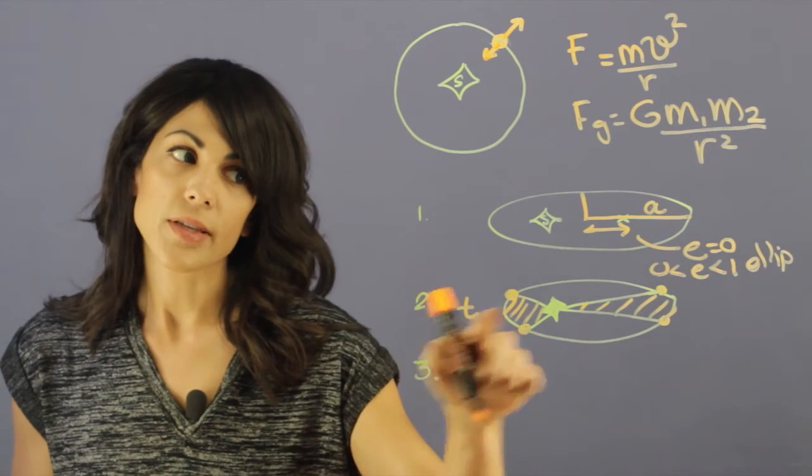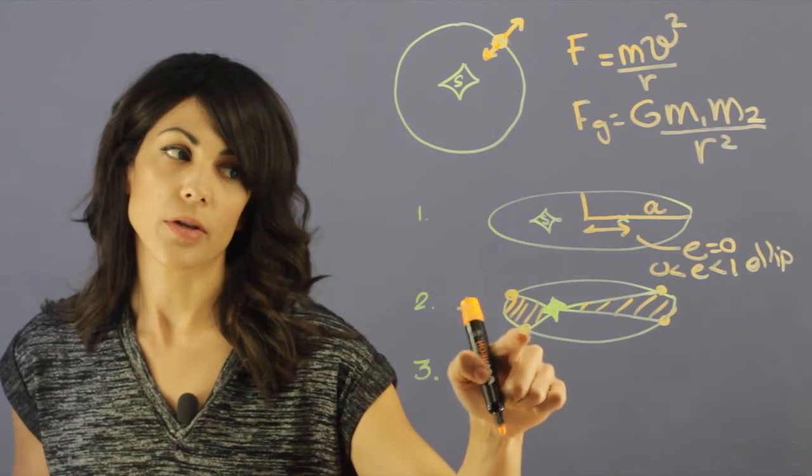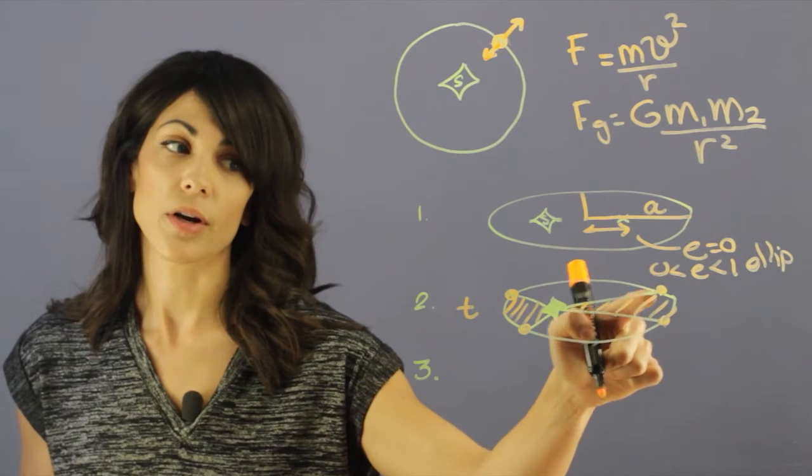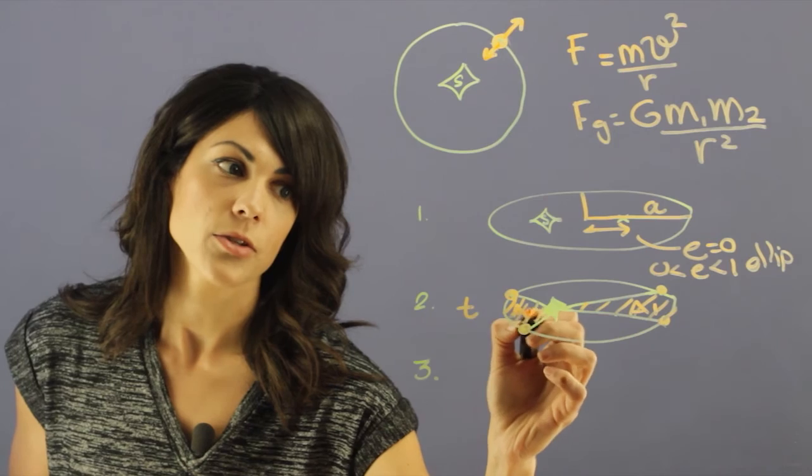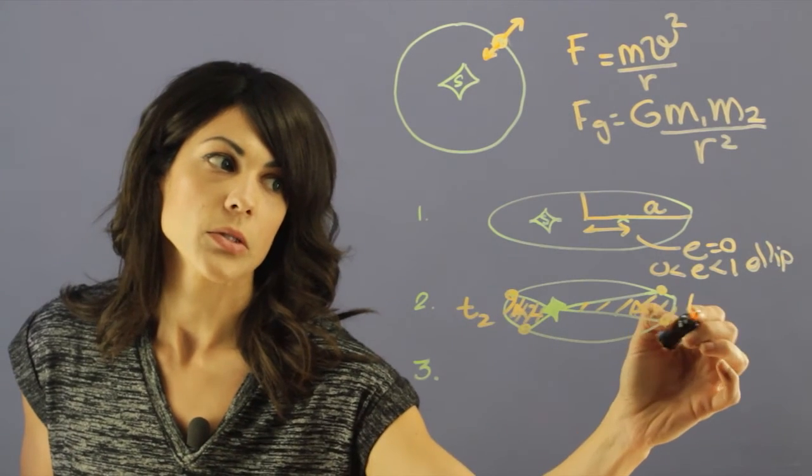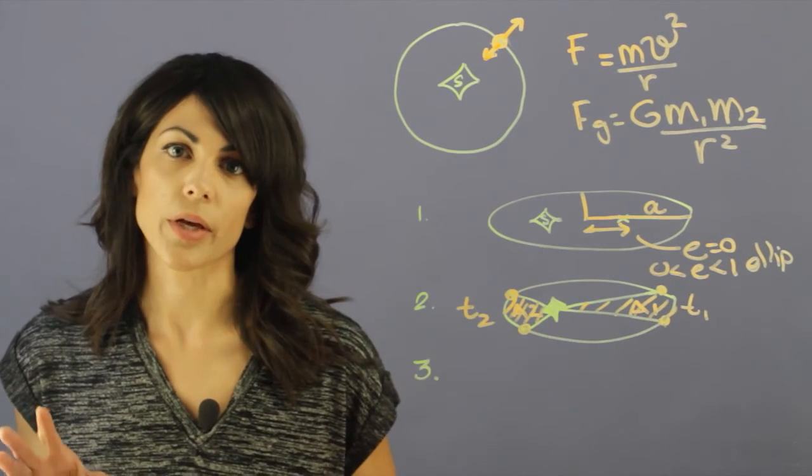So let's say that on the other side of the orbit, the furthest point, it goes from here to here, and it covers this much area. Now, if this time, the time to go from here to here is the same time to go from here to here, these areas are equal. So that means that a1 is equal to a2, if t2 is equal to t1. And that's the equal area law.